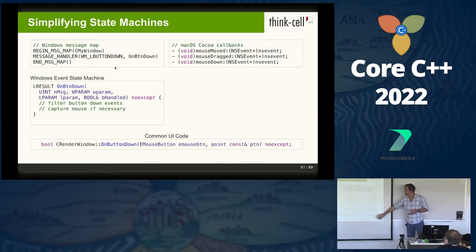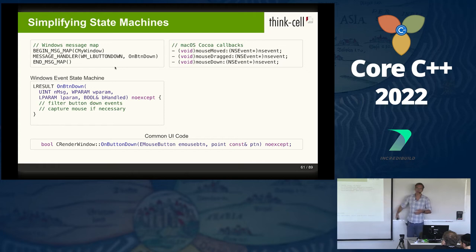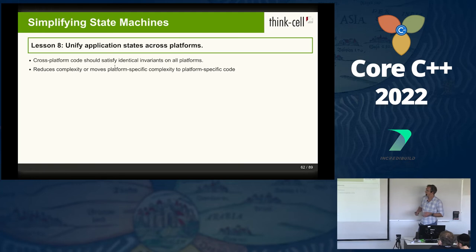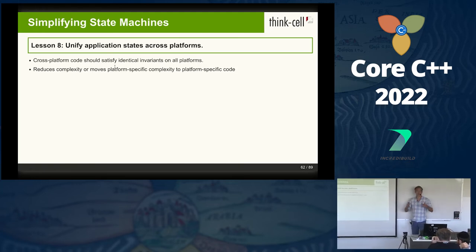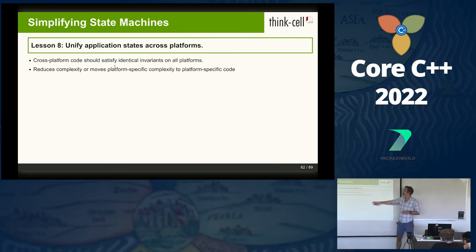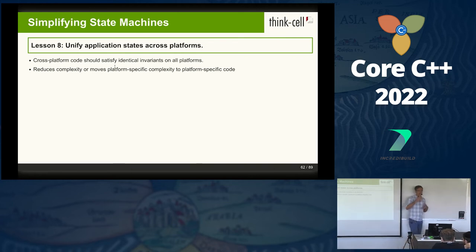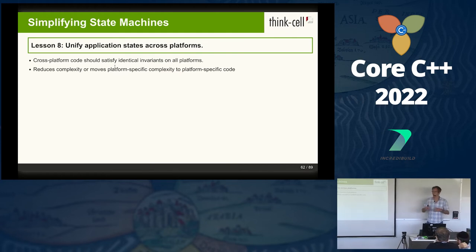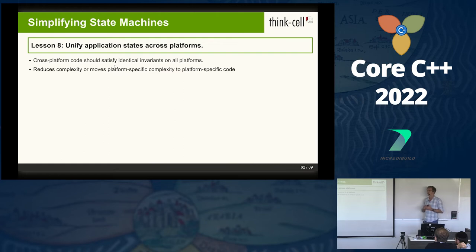We have two completely different behaviors on both operating systems. What you have to do is implement the same state machine on one of the operating systems. Maybe you have a handler for Windows mouse messages that forces that complex behavior into the same state machine you get on macOS. Then both call the cross-platform code in your application that does rendering, mouse interaction, whatever. Writing an easy-to-read cross-platform application meant unifying state machines across platforms and moving platform-specific complexity into platform-specific code.